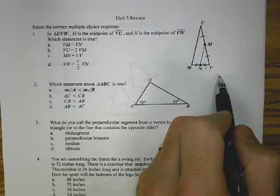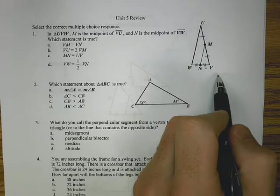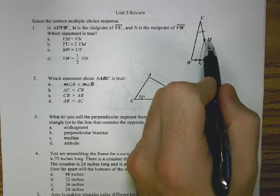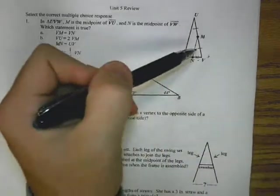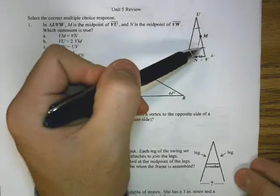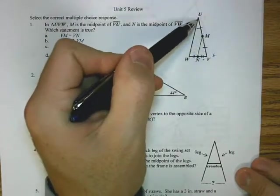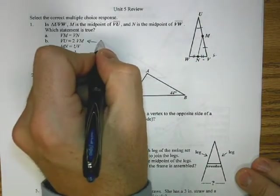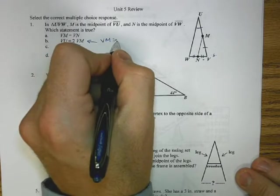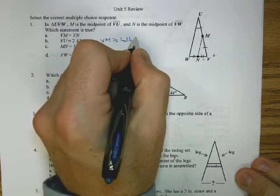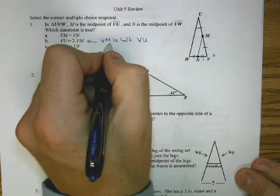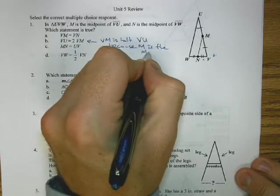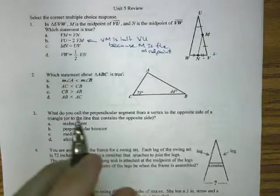We're going to skip that one, but it's probably not going to work for us. VU equals 2 VM. Okay, VU is the whole thing, and that's equal to 2 times VM. Well, if I took VM, which is this distance, and doubled it, I would have VM and really MU, because they're the same.